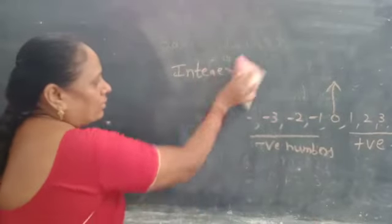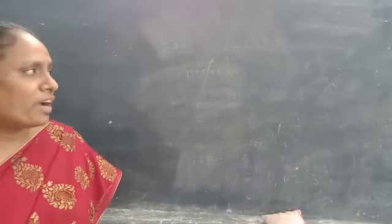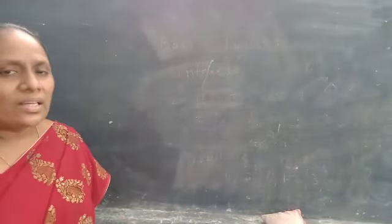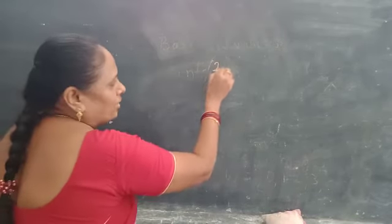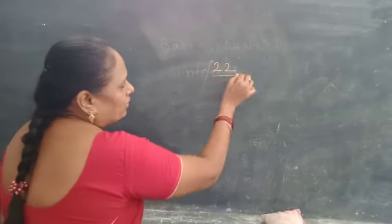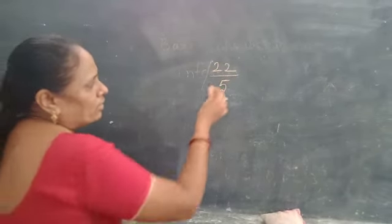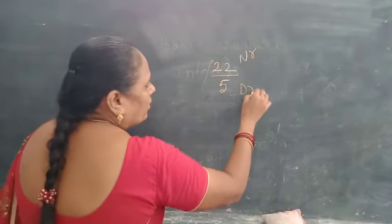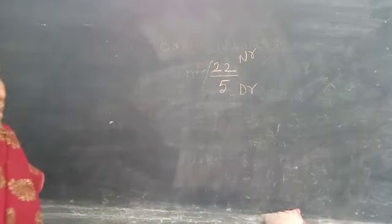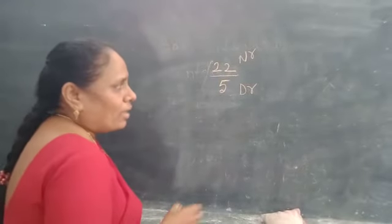Before we move on, here is an example. Raju went to a shop and bought a set of 5 pens for 22 rupees. What is the cost of 1 pen? This can be done using division — 22 divided by 5. The top value is called the numerator and the bottom value is called the denominator. This is also called a fraction. These fractions are also called rational numbers.